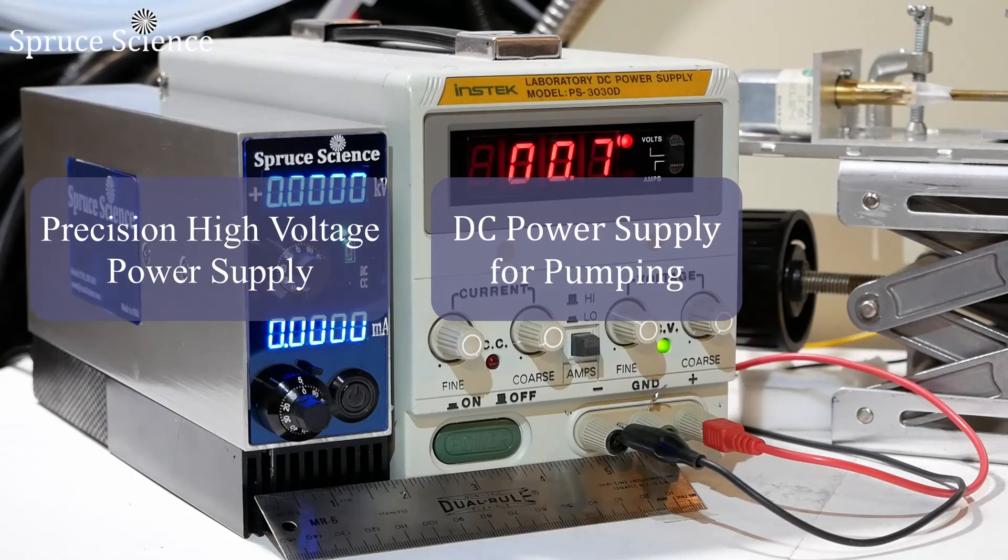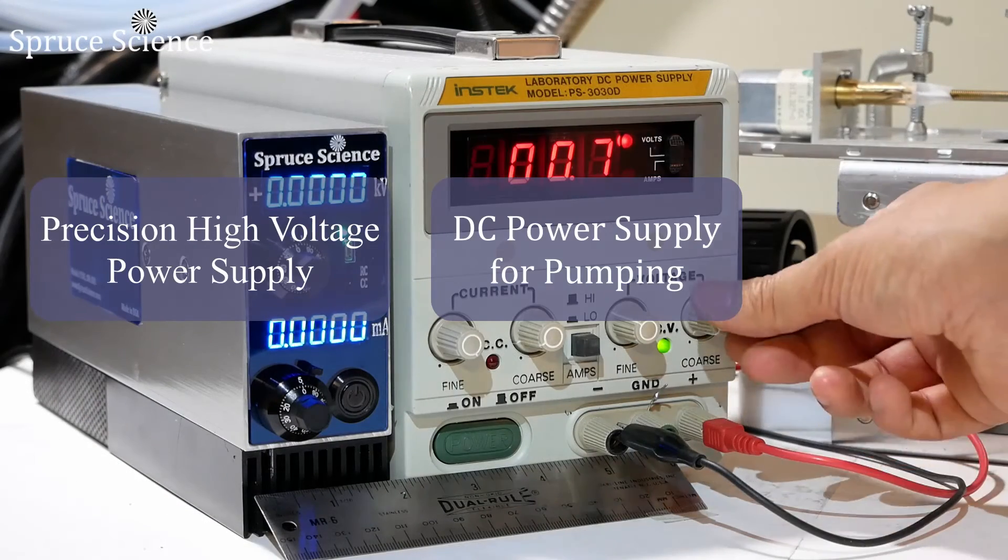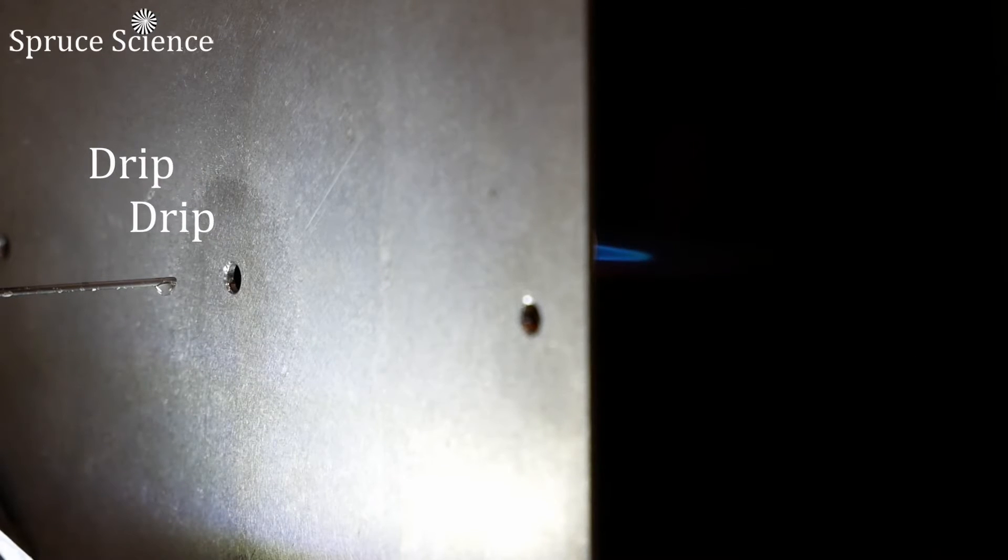High voltage power supply is currently off, so if you look at the tip of the needle, you will see droplets forming then dripping continuously. The sample in this demonstration is sodium dissolved in water and isopropyl alcohol solution.